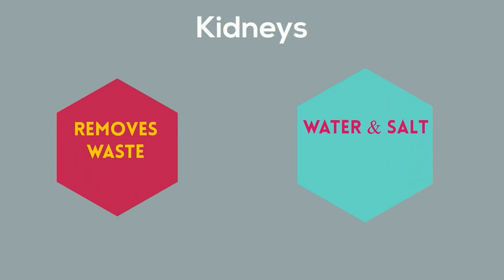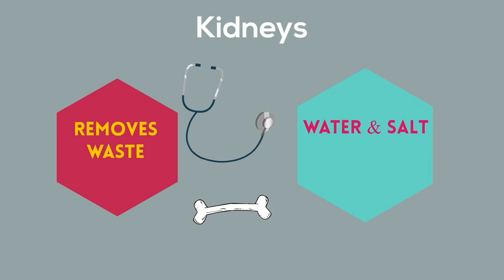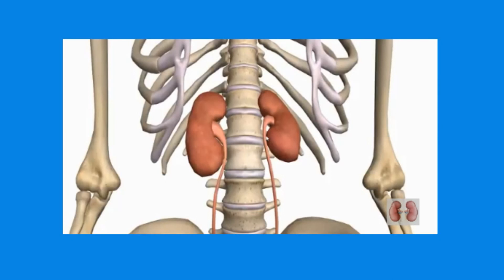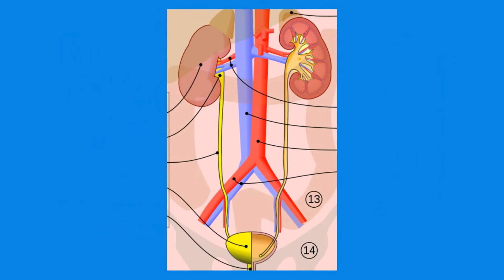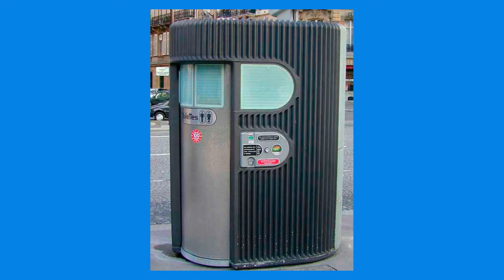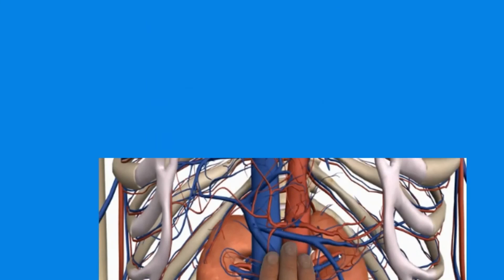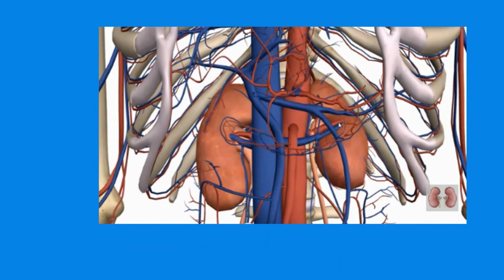Your kidneys also help control your blood pressure and can stimulate the bone marrow to make more red blood cells. Attached to each kidney are tube-shaped tubes called ureters, which carry the waste material from the kidney to the bladder. The waste filtered out by the kidney is called urine. This travels down the ureter and into your bladder. When the bladder fills up, it signals your brain that it is time to go to the restroom. These two bean-shaped organs found by your vertebrae are very important for keeping your blood and your body clean from waste.